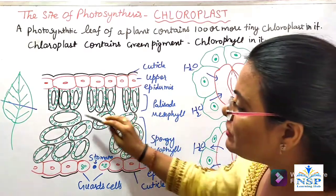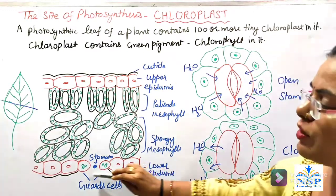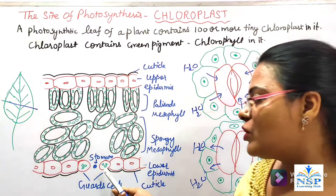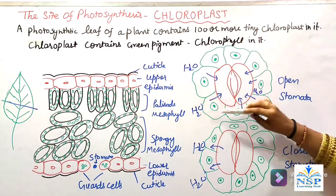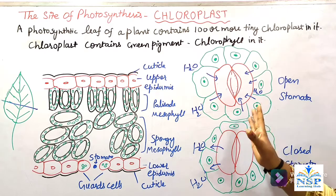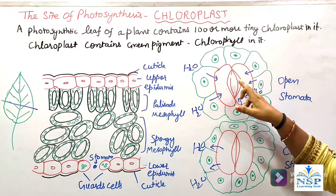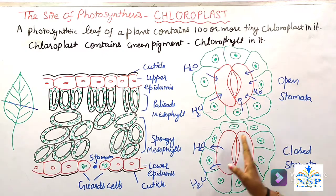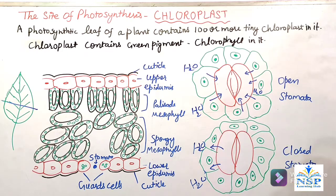Spongy mesophyll cells के बीच air spaces होते हैं जो gases exchange में help करते हैं। Lower epidermis में guard cells होती हैं। जब guard cells में water maximum होता है तो stomata open होता है और gases exchange easily होता है। जब water कम होता है तो guard cells shrink होती हैं और stomata close हो जाता है, जिससे water loss रुकती है।